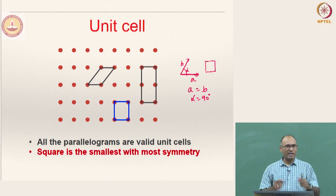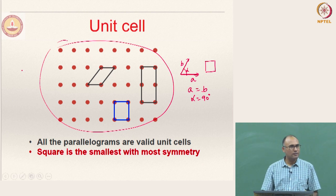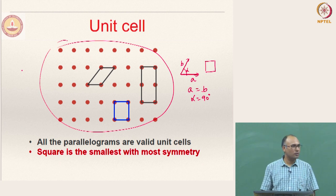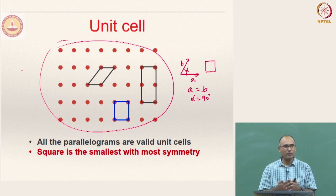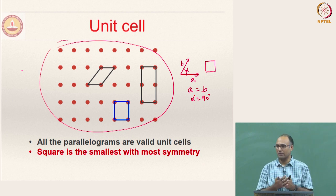Consider having a triangle. Can you fill the entire space of a lattice using a triangular unit cell without leaving voids? Just by translation it is not possible — you would have to rotate the unit cell, so a triangle cannot qualify as a unit cell. In general, in 2D a parallelogram is the qualified unit cell, and in 3D a parallelepiped is the qualified unit cell.